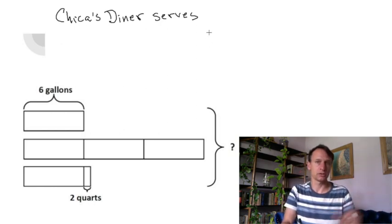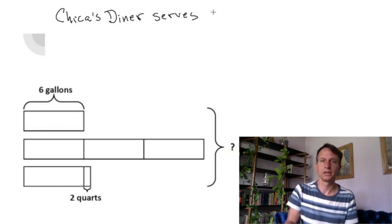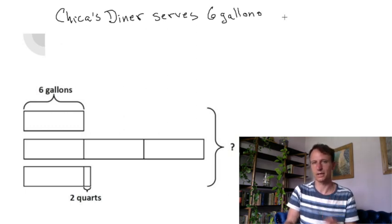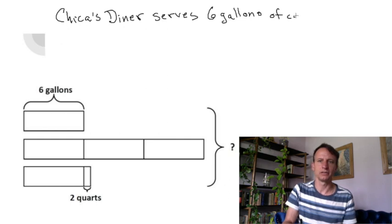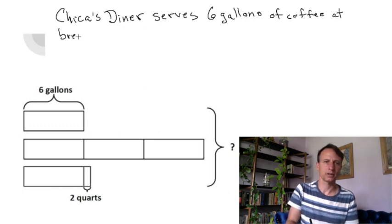All right, so we need a restaurant. Let's call it Chica's—Chica's Diner, you know why? Because it's a shorter word. Chica's Diner serves—oh, and we can have them, actually, let's do this. We can have three different beverages, right? And then we want to know how much they serve all together.